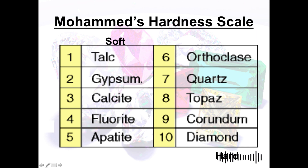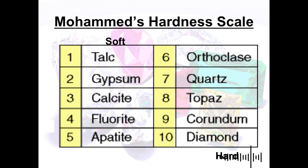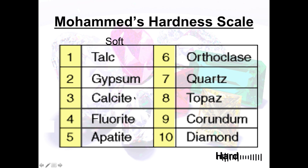The next mineral is gypsum, rated 2 on the Mohs scale. Gypsum is a soft sulfate mineral usually composed of calcium sulfate dihydrate and is commonly used for fertilizers, plasters, and wall boards.